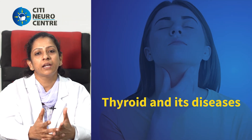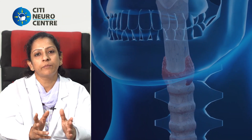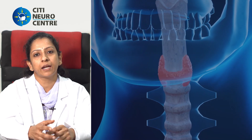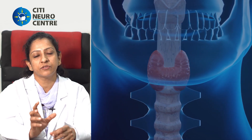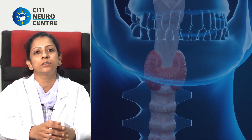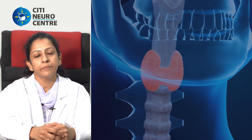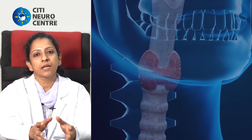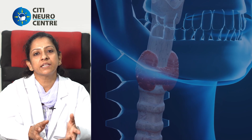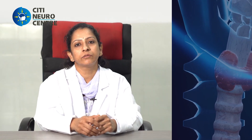The thyroid gland is a small butterfly-shaped gland at the base of the neck. It's wrapped around the windpipe. This thyroid gland secretes a few hormones — T3 and T4 — and these hormones basically affect all the cells in our body.